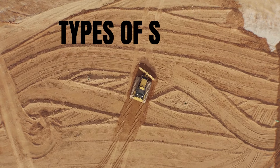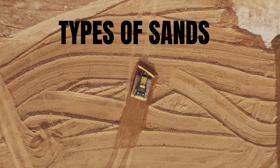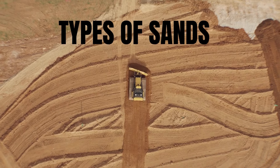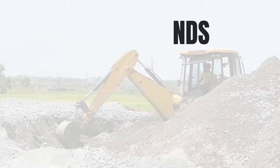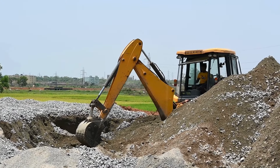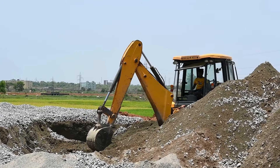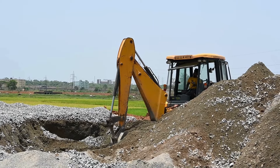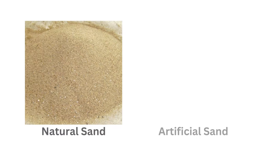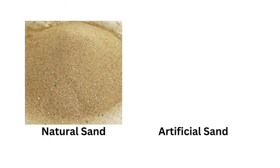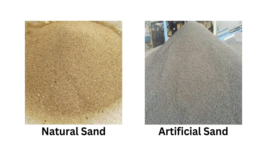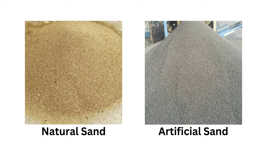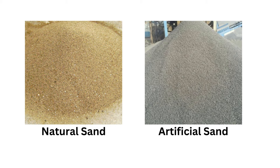Welcome to Civil Engineering Fanatics. Today we will discuss the basic types of sands used in construction. The major sources of sand are directly taken from nature. Due to their scarcity, we humans convert other resources in nature or certain by-products of construction into artificial sand. Hence, we have natural sources of sand and man-made sources.